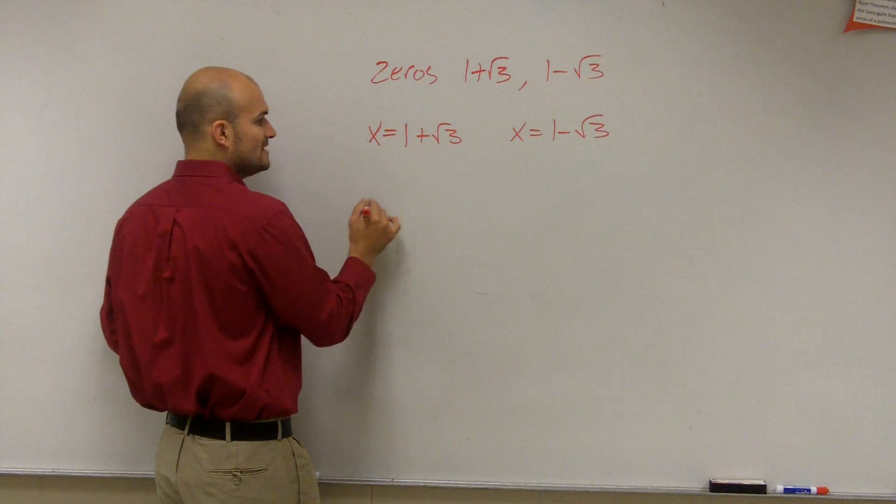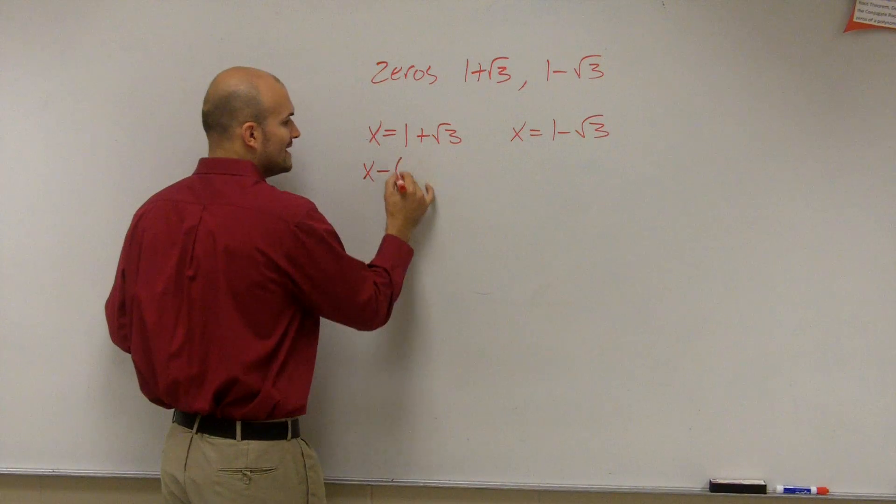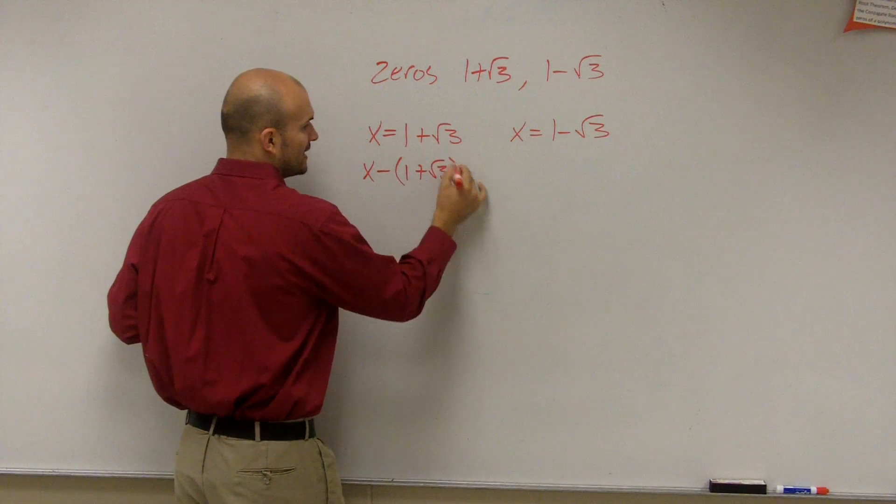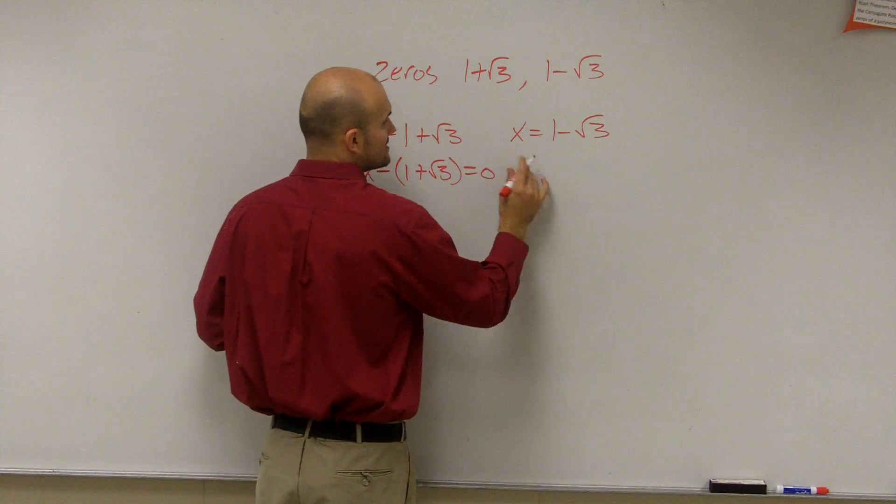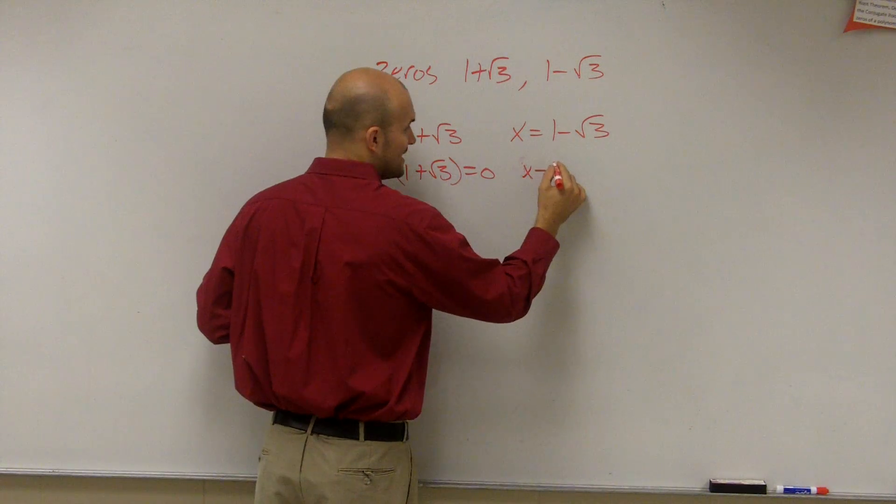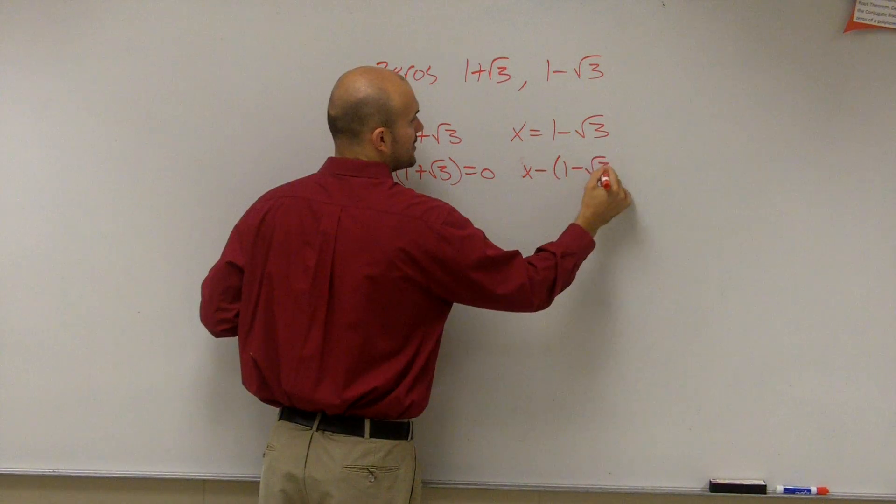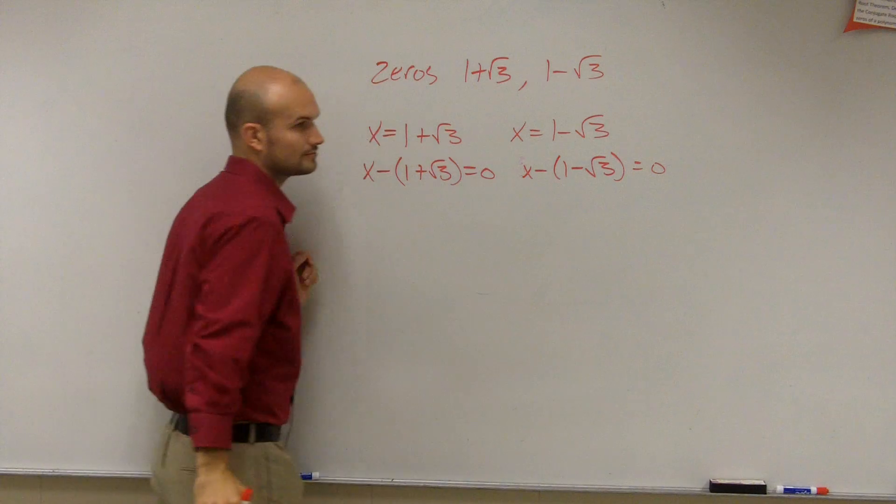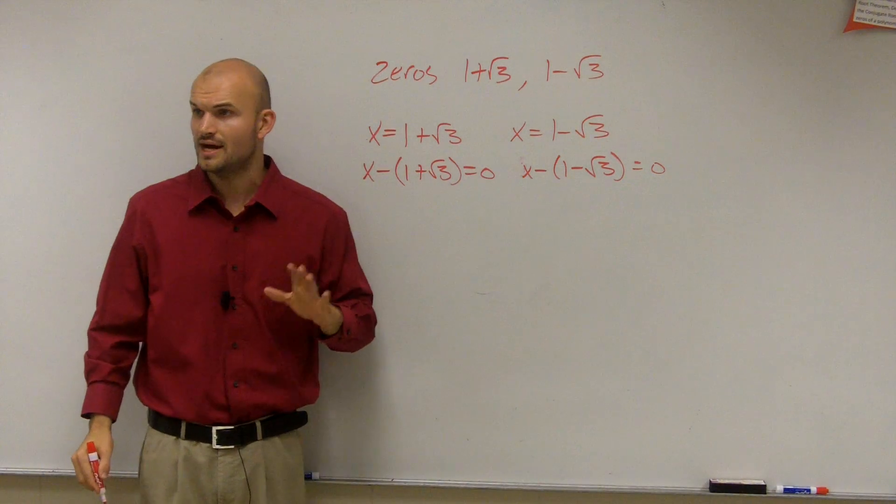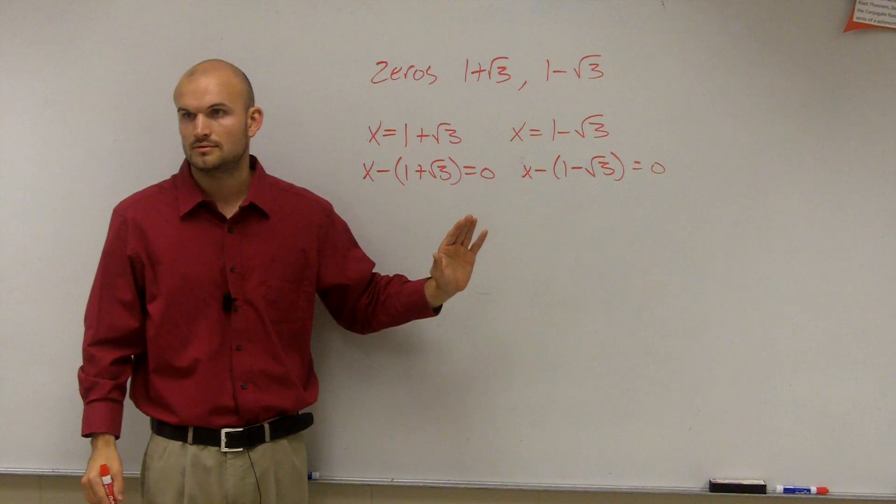So what I'm going to do is I'm going to set all these equal to 0. So I'm going to say x minus 1 plus square root of 3 equals 0, and x minus 1 minus square root of 3 equals 0. Does everybody follow me so far? If not, you can raise your hand. It's totally cool.